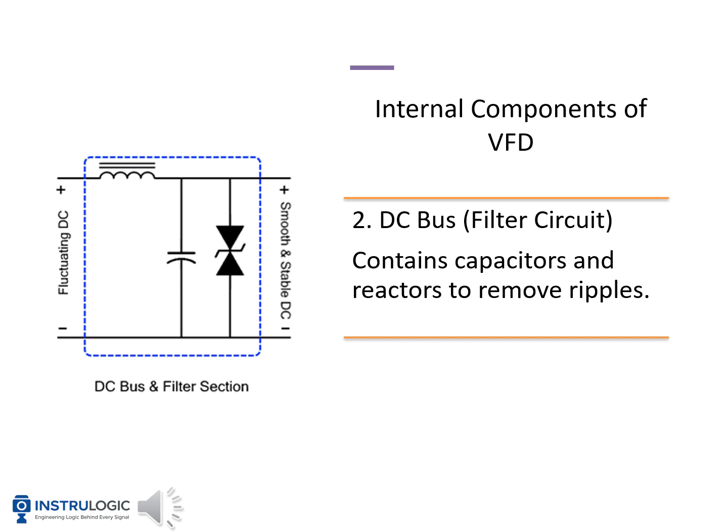Let's talk about the second internal component of a VFD, which is the DC bus, also called the filter circuit. After the rectifier converts AC to DC, the DC is not perfectly smooth — it has ripples. The DC bus section removes these ripples and makes the DC stable using capacitors and reactors (or inductors). Capacitors store and release energy to smooth out voltage fluctuations, while reactors help reduce current ripples and improve power quality. The fluctuating DC enters the filter, and the output is a smooth, stable DC ready for the inverter stage.